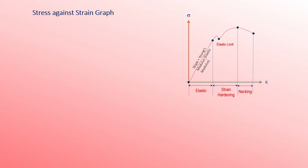The highest point on the graph refers to the ultimate tensile strength, also called the ultimate stress. The final point on the curve refers to the rupture stress — the moment when the test specimen undergoes breaking.